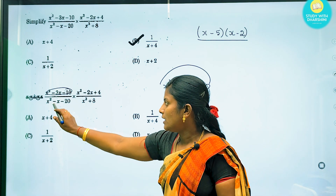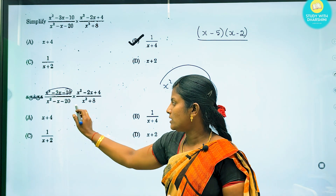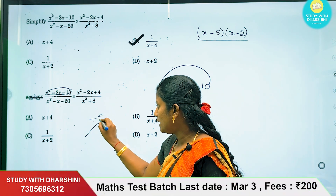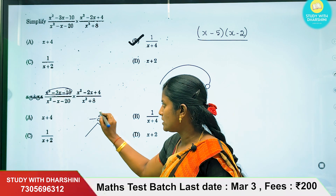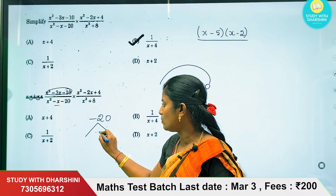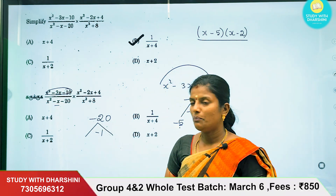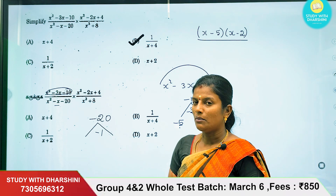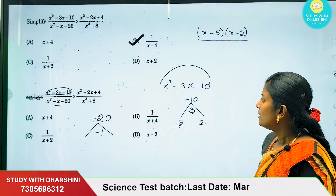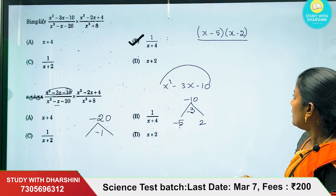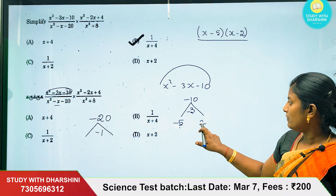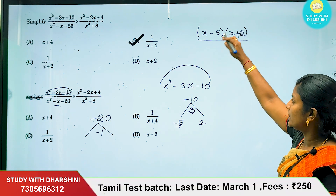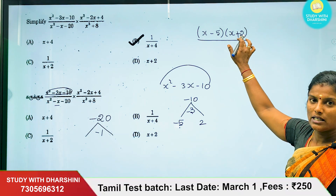In the denominator, x squared minus x minus 20. If the product is minus 20 and the middle term is minus 1, we need to choose two numbers. The numbers are minus 5 and plus 4: minus 5 plus 4 equals minus 1. So the denominator factors as (x minus 5)(x plus 4).